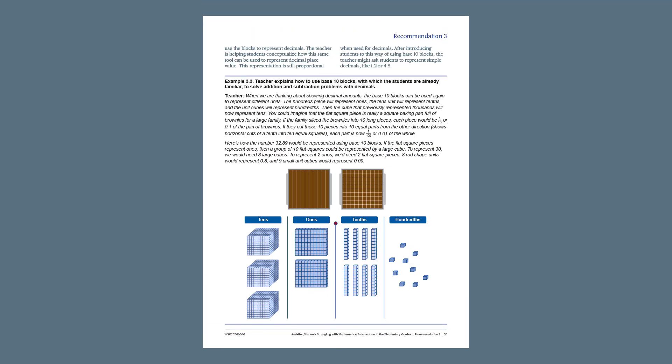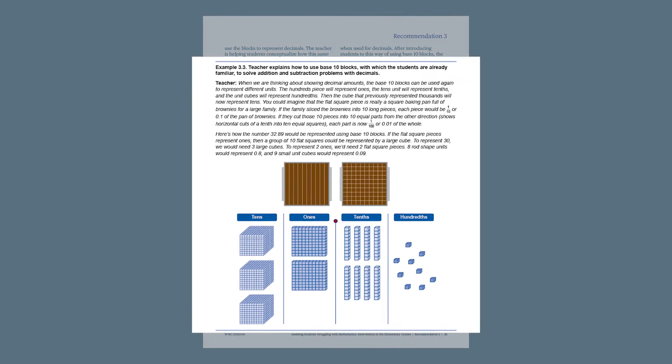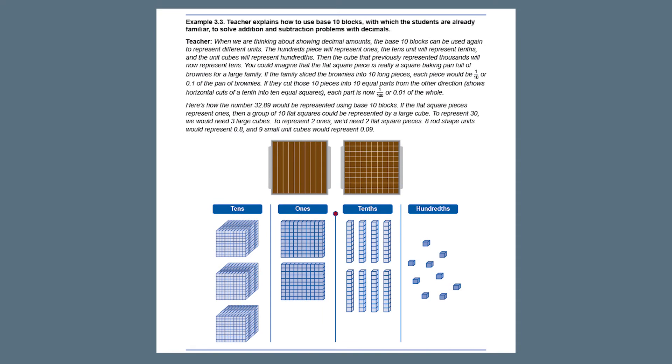First, and most importantly, choose the representation wisely. Not all representations work well with every mathematical concept or procedure. For example, if you are modeling place value, you want to choose a concrete material that shows the proportional relationship between the place value positions, rather than using one that does not represent the relationship proportionally.